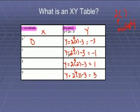And our y point, which is negative 3. Our x point, which is 1, our y is negative 1, x is 2, y is 1, x is 3, y is 3. So now we have our x, y points.